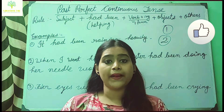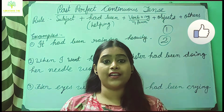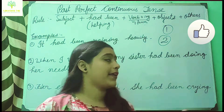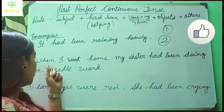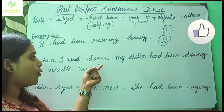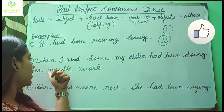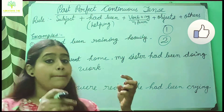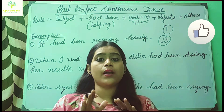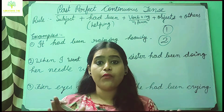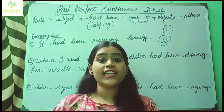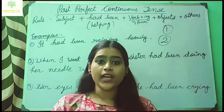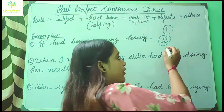Second, it is used for an action that wasn't completed in the past. For example, 'When I went home, my sister had been doing her needlework.' This means my sister did not complete her work, so it is past perfect continuous tense.